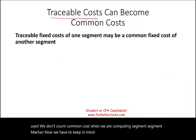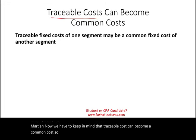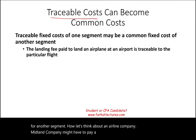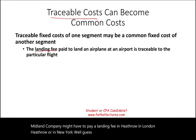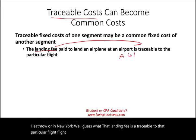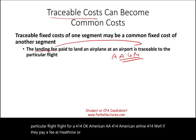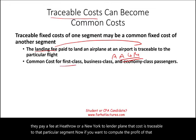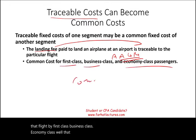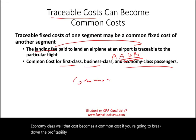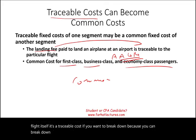We have to keep in mind that traceable cost can become a common cost. A traceable fixed cost for one segment could be a common cost for another. For example, an airline might pay a landing fee at Heathrow or New York — that fee is traceable to flight AA414. But if you break down the profitability of that flight by first class, business class, and economy, that landing fee becomes a common cost across those sub-segments.